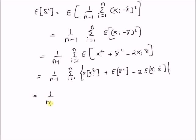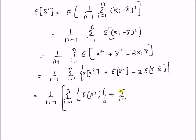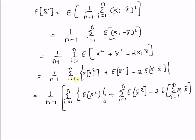This is equal to 1 by n minus 1, summation i equal to 1 to n expectation of x_i squared, plus summation i equal to 1 to n expectation of x̄ squared, minus 2 times expectation of summation i equal to 1 to n of x_i into x̄. Since expectation is a linear operator, we can take the summation inside, so we have summation of expectation of x_i from i equal to 1 to n, multiplied by x̄.